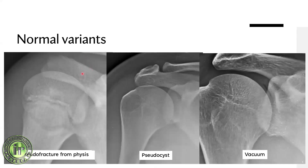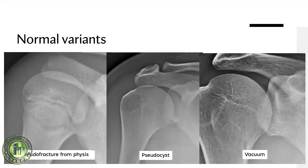There are several normal variants to be aware of. A line running through the proximal humeral shaft can easily be mistaken for a fracture - this is a proximal humeral pseudo-fracture due to obliquity of the physis. You may also see a cystic area in the humeral head - a pseudocyst - where the trabeculae just appear that way. Another subtle finding is sclerosis with subcortical cystic changes from rotator cuff enthesiopathy. You can also see linear gas shadows inside the joint - a vacuum phenomenon - which is normal and seen in the hip and shoulder.